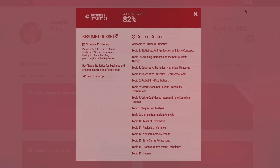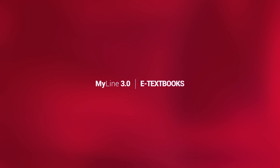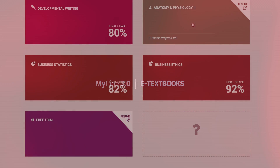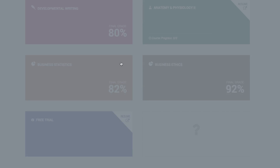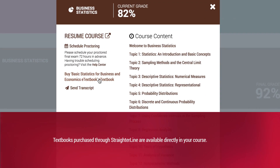If your course has an option for an e-textbook, you'll also find it available on the flipped course card. If you purchase through StraderLine, your e-textbook is available directly in your course.